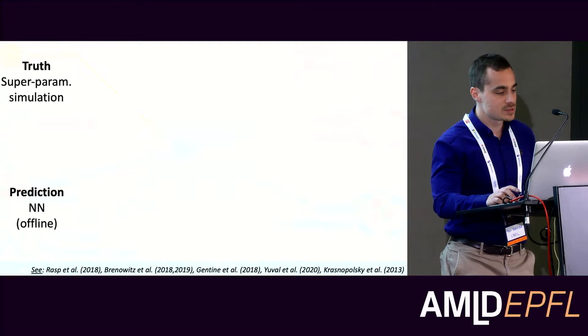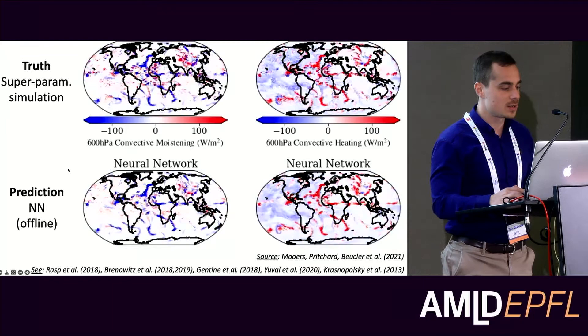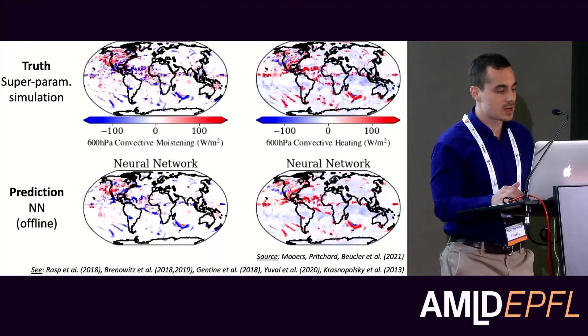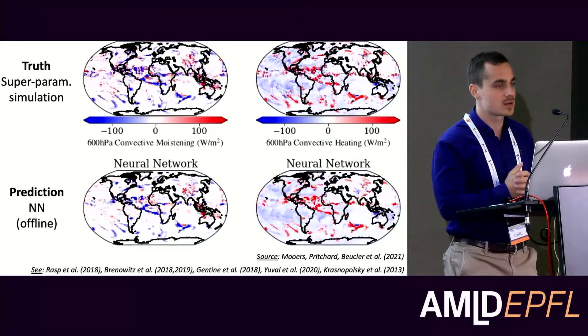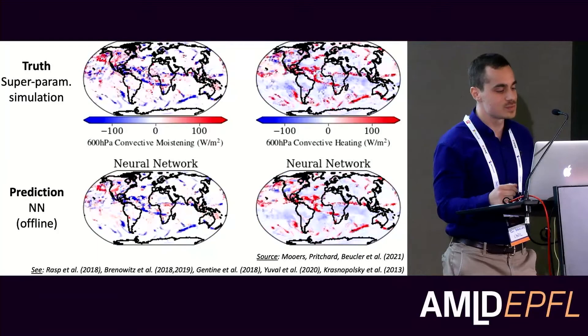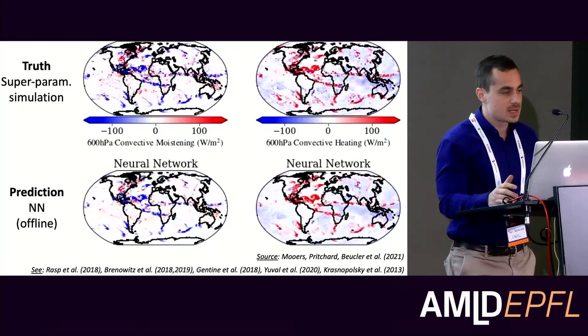Here is how well those neural networks perform offline — before coupling back to the climate model. On the left is how storms redistribute water vapor in the middle of the atmosphere; on the right, how they redistribute temperature in the vertical. The truth is on top, and the neural network prediction is at the bottom. You really have to squint to see the differences — there's some smoothing of variability, but overall it's really impressive given the complexity of the task.